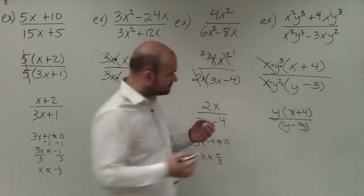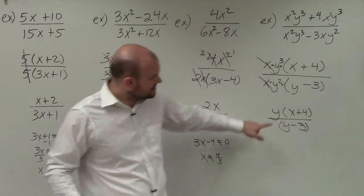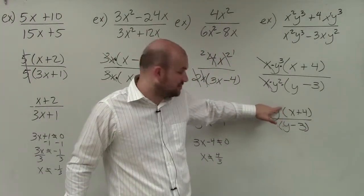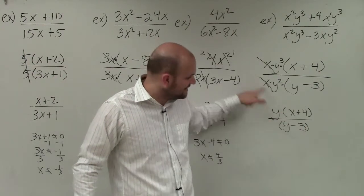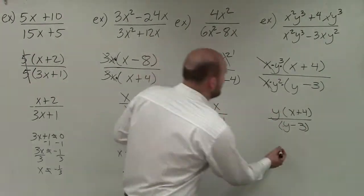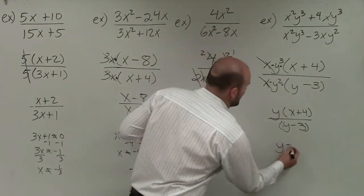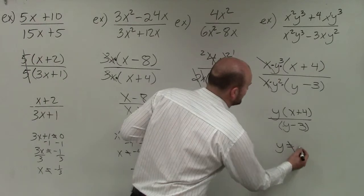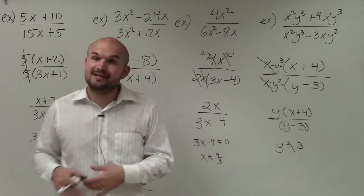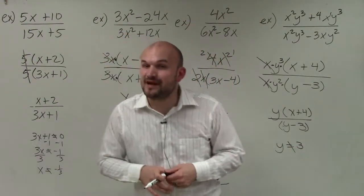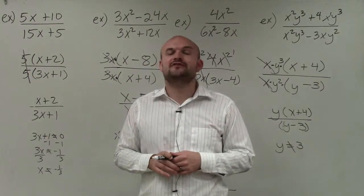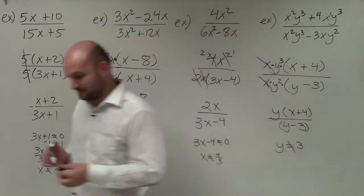Notice that this y is separated by multiplication in the numerator, but the y in the denominator is not, so I cannot divide out the y's. Therefore, we also know that y cannot equal positive 3. So there you go, ladies and gentlemen — that is how you simplify rational expressions by factoring out the GCF. Thanks.